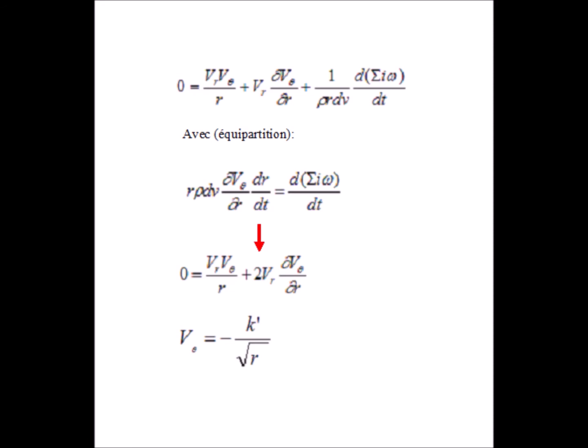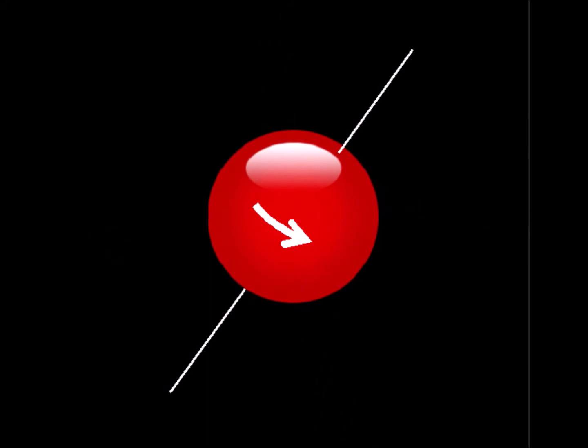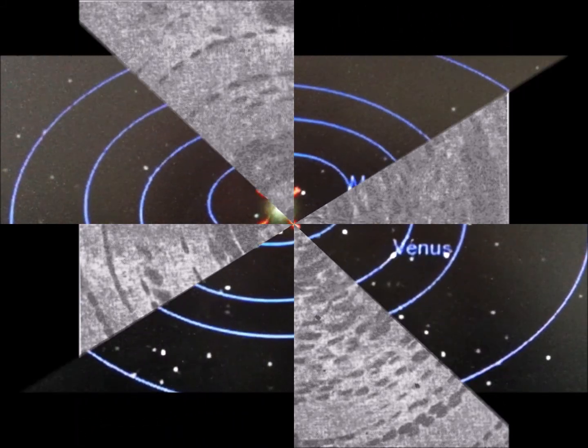The rotation of vortices requires an input of angular kinetic energy. It can only come from the angular kinetic energy of particles of ether. The rotation of vortices absorbs some of the angular kinetic energy of particles of ether.